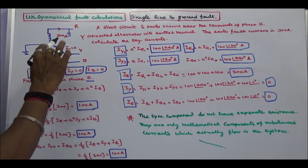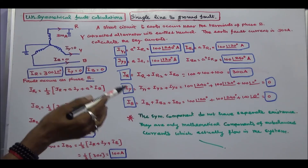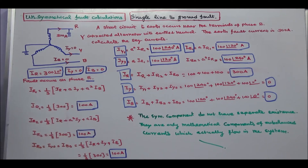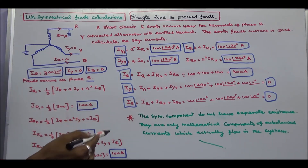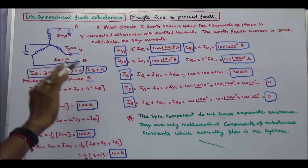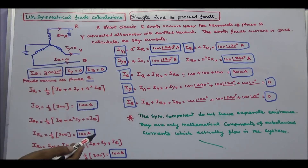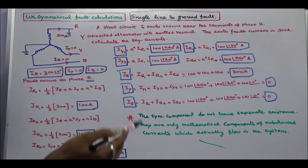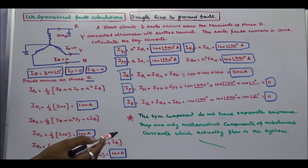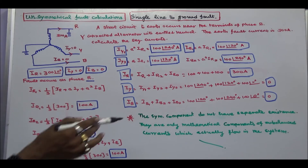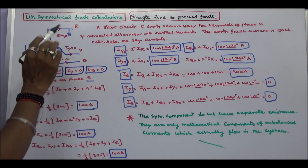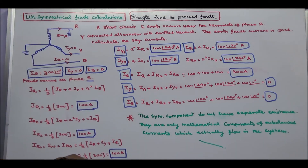Once a fault current is given, you can easily calculate the sequence current of all the phases. The conclusion is: the symmetrical components do not have separate existence. They are only mathematical components of unbalanced currents which actually flow in the system. If a fault current is given, this way you have to calculate the sequence currents in the other phases.